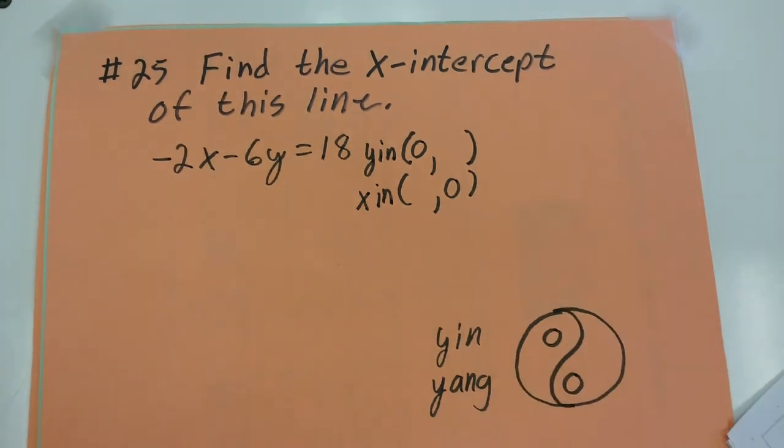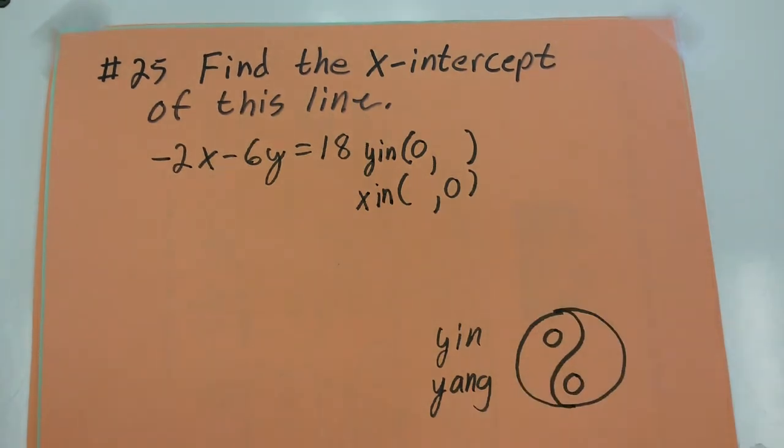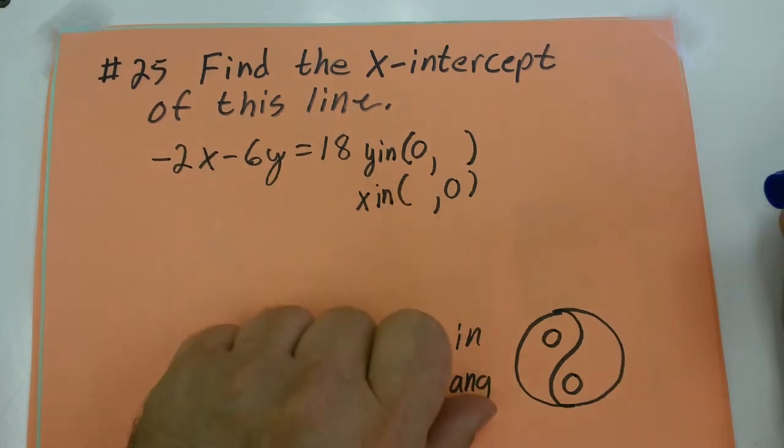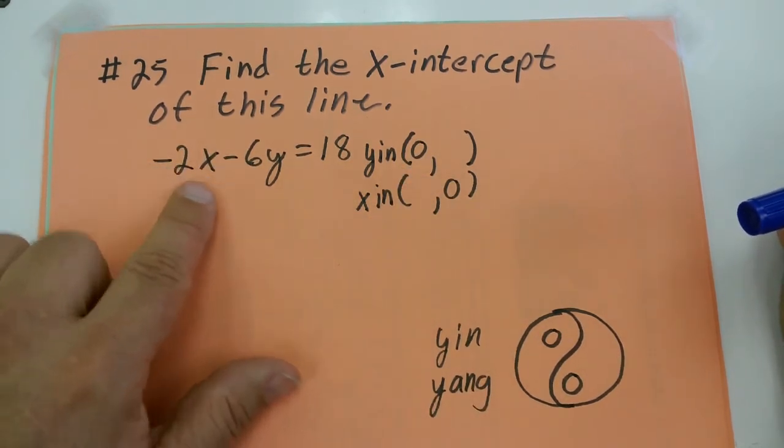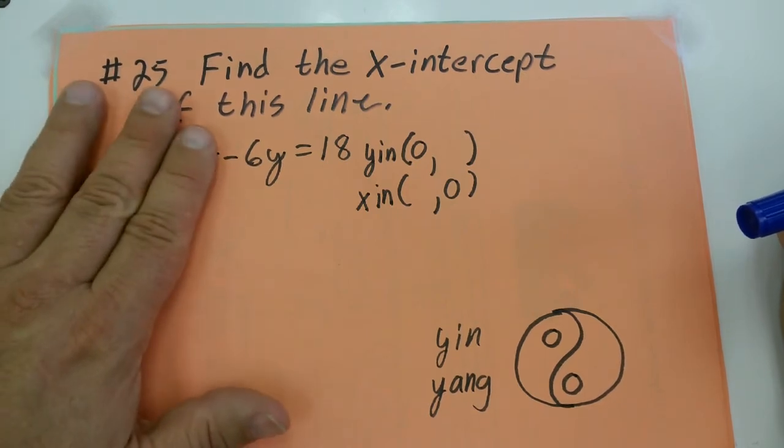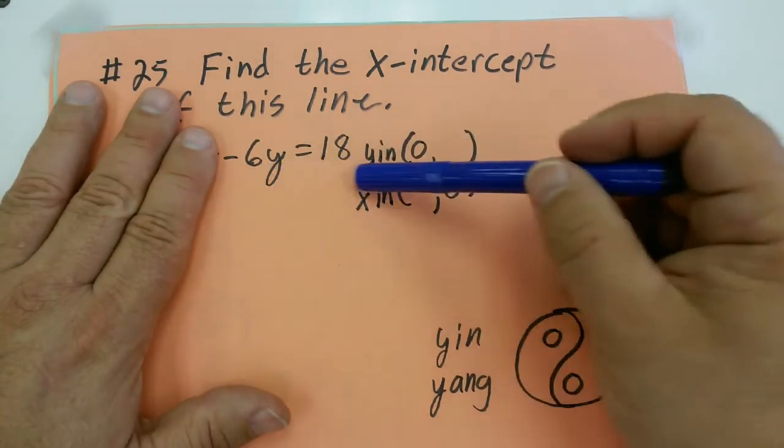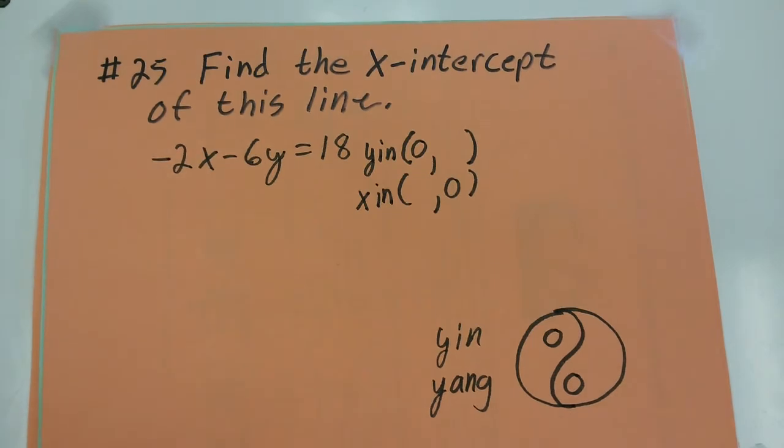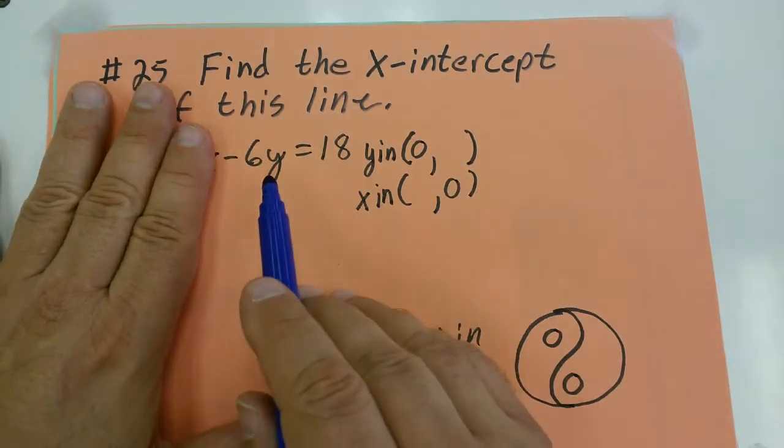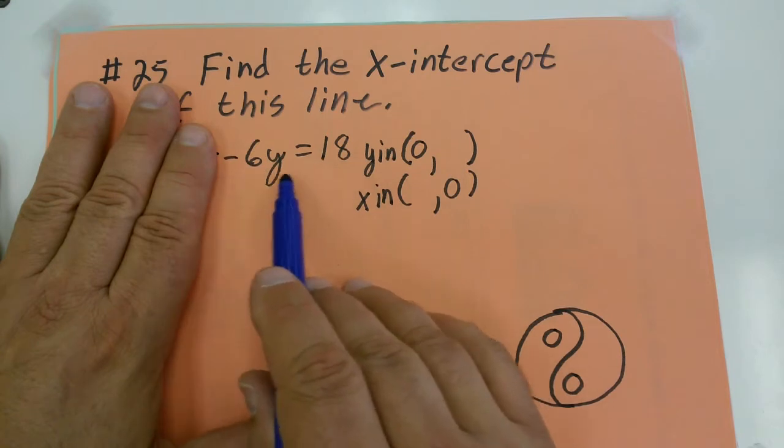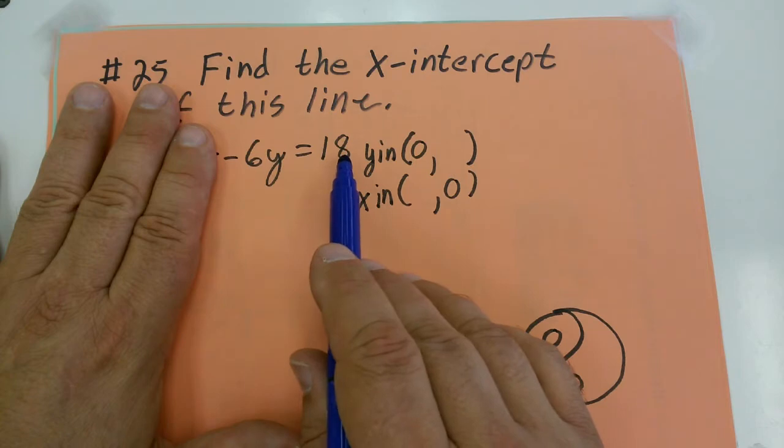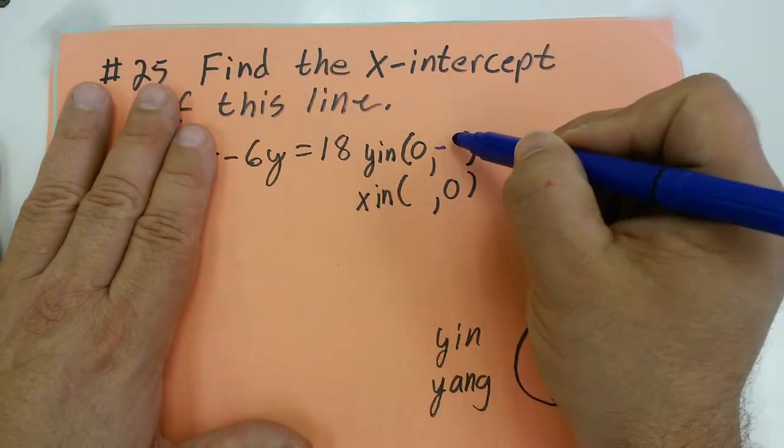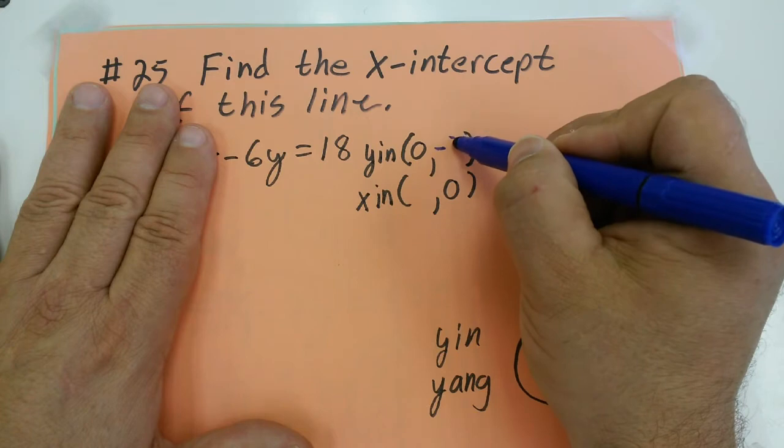A lot of people do this the same way. They call it the cover-up method. Basically, when x equals 0, you get 2 times 0 is 0. So you just cover up that x-term to find the y-intercept. That leaves me with a little tiny equation: negative 6y equals 18. You would divide both sides by negative 6, and you would get y equals negative 3. So the y-intercept for this line would be (0, -3).